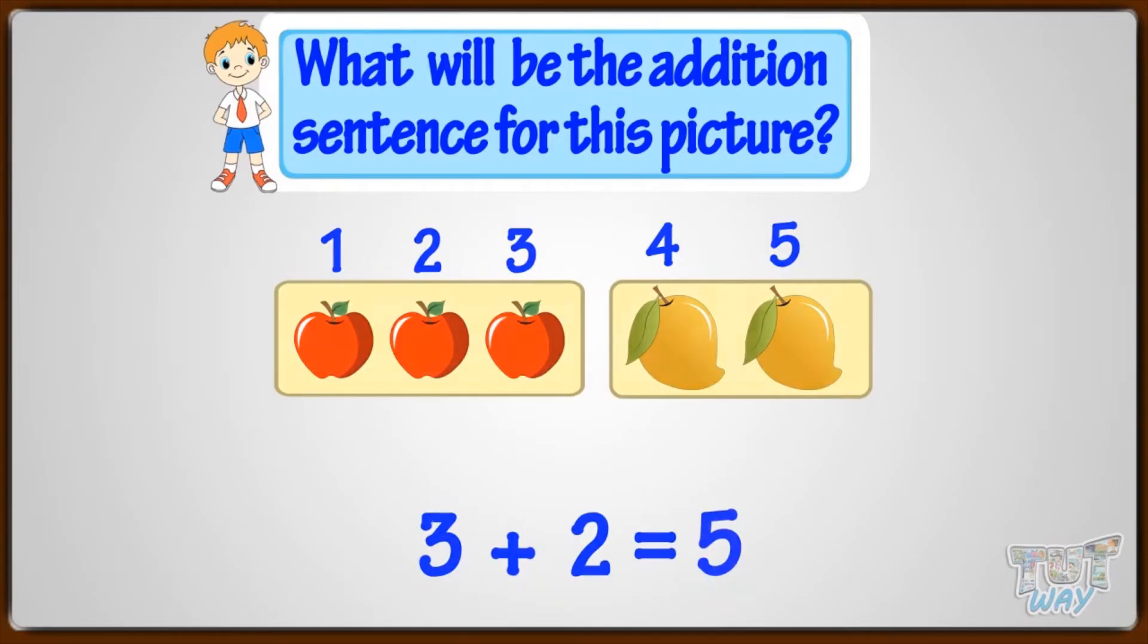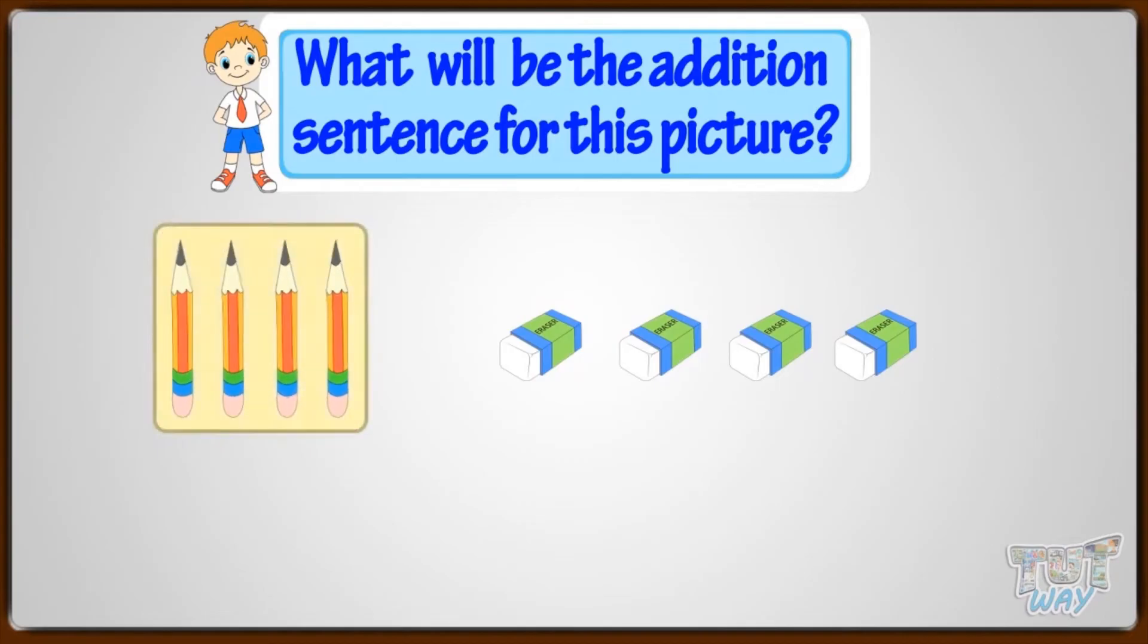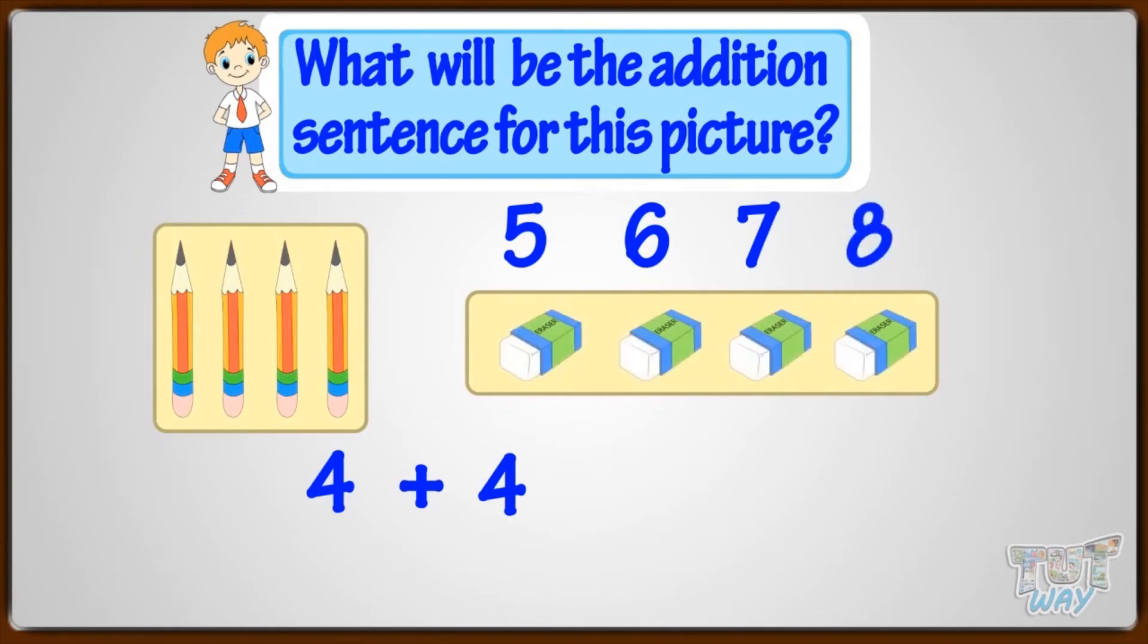Let's take another example. What will be the addition sentence for this picture? There are 4 pencils and 4 erasers. So, first write 4 plus 4. Now, count the total number of things. You know pencils are 4. So, count from 5. The erasers. 5, 6, 7, 8. So, total number of things are 8. Write 4 plus 4 equals 8. And this is our addition sentence for the picture.